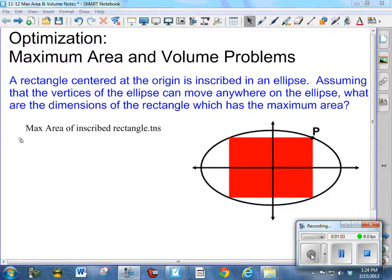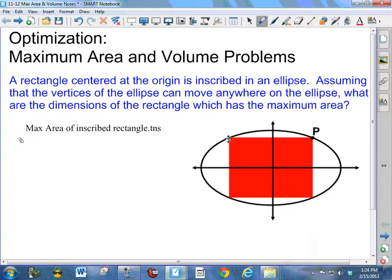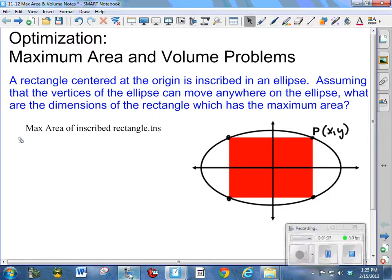So we're going to look first at a rectangle. A rectangle centered at the origin is inscribed in an ellipse. Inscribed means that each of its vertices are touching the ellipse. They are on the ellipse. So they share these four points in common. In particular we have a point P here that we're going to call label XY. It has coordinates XY. Assuming that the vertices of the ellipse can move anywhere on the ellipse, what are the dimensions of the rectangle which has the maximum area? So we're going to look at a little animation that will help explain that.